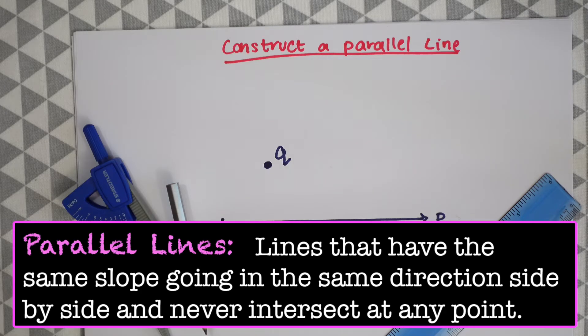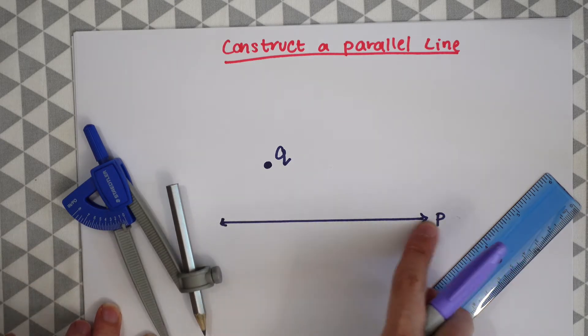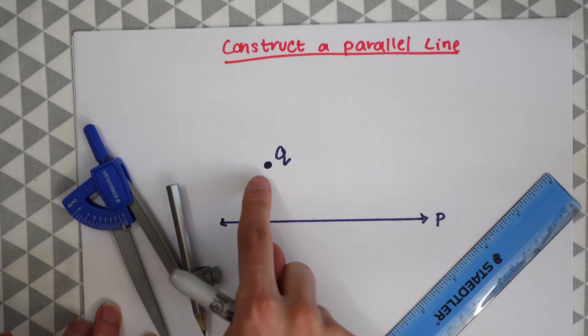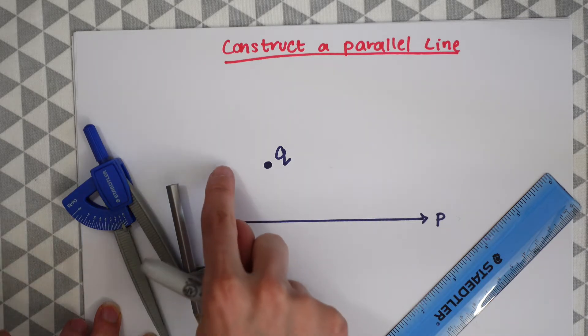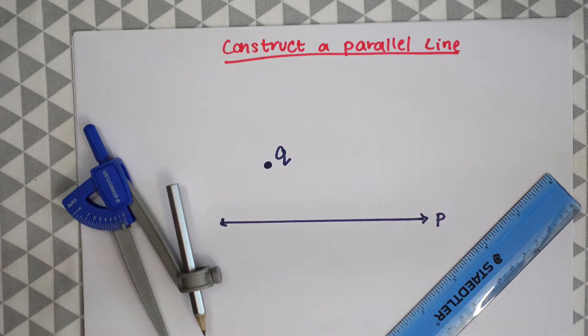Parallel lines are lines that have the same slope going in the same direction side by side that never intersect each other at any point. We have this line P going horizontally and we're going to want our parallel line to be going also horizontally with the same slope.